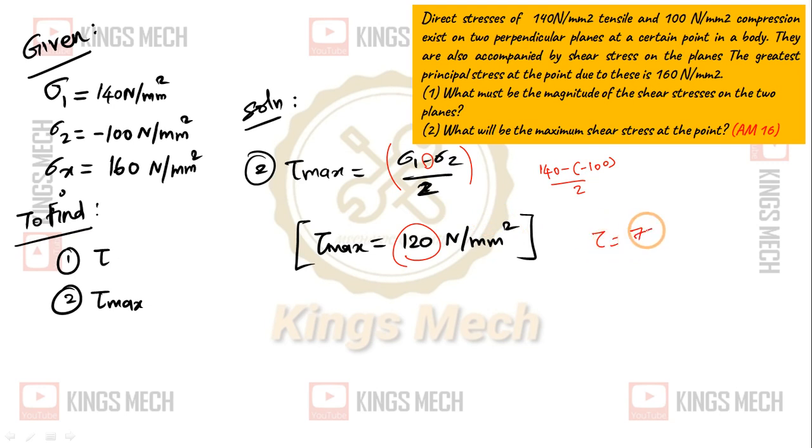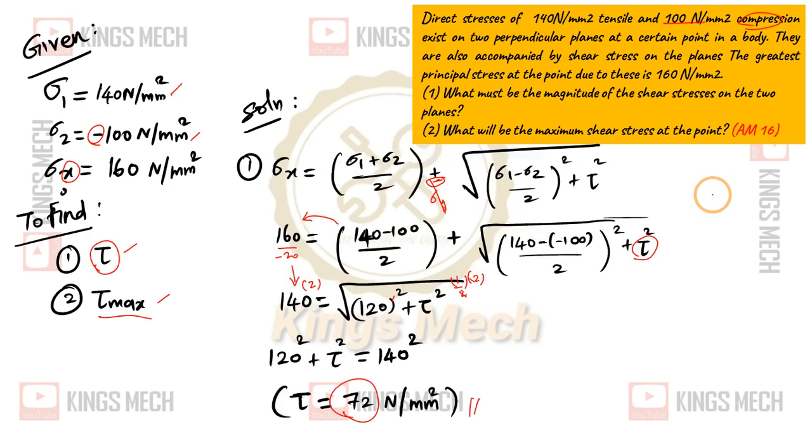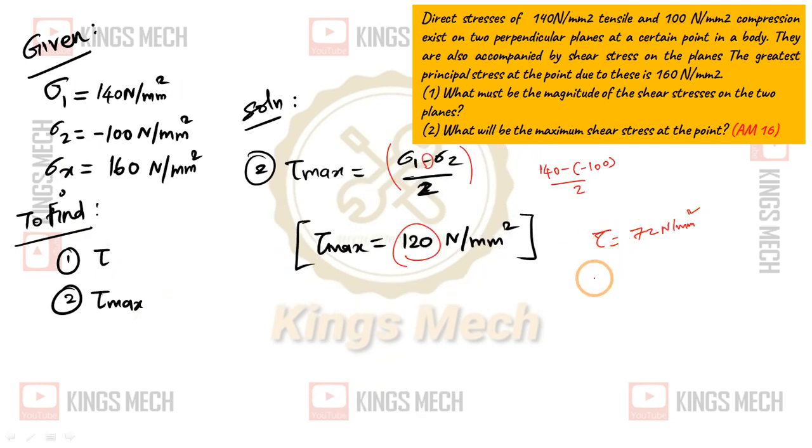Tau value is 72 newton per mm square. Tau max value is 120 newton per mm square.